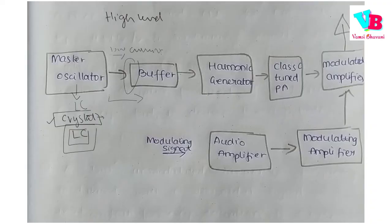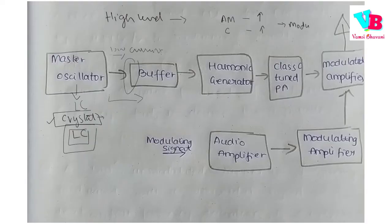In the High Level Transmitter, we use the AM signal and carrier separately. We use an amplifier to amplify each signal separately. The block diagram includes the Crystal Oscillator, the Buffer, a Harmonic Generator, and a pre-amplifier. The Harmonic Generator is used to obtain the required frequency level, and then we amplify the amplitude.